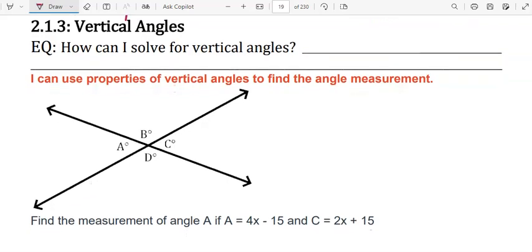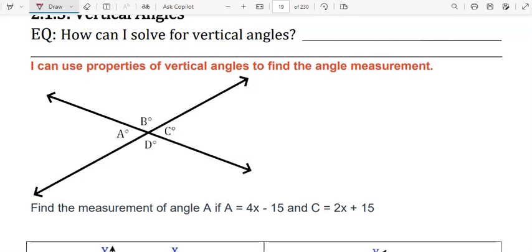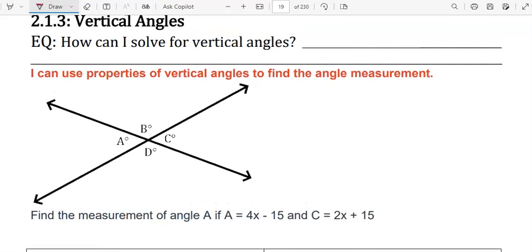Skill: I can use properties of vertical angles to find the angle measurement. Find the measurement of angle A if A equals 4x minus 15 and C equals 2x plus 15.